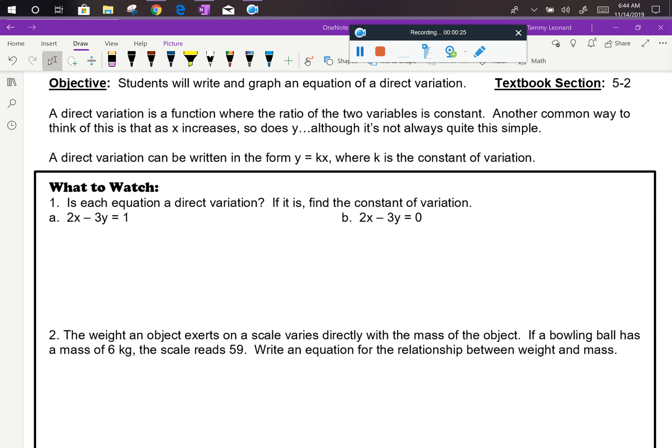A direct variation can be written in the form y equals kx, where k is called the constant of variation.